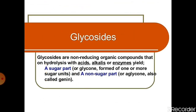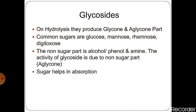What are glycosides? Glycosides are non-reducing organic compounds. On hydrolysis with acids, alkalis or enzymes, they yield a sugar part — also called glycon — formed of one or more sugar units, and a non-sugar part — also called aglycon or genin part. On hydrolysis, glycosides produce glycon and aglycon parts. Glycon means the sugar part and aglycon means the non-sugar part.